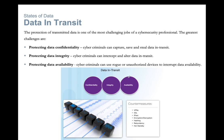Countermeasures for protecting data in transit include VPNs, remote access, SSL, and IP security. Encryption, decryption, and hashing functions are used for integrity checks, along with redundancy and hot standby configurations. These methods are used by cybersecurity professionals to protect data confidentiality, integrity, and availability during transit.